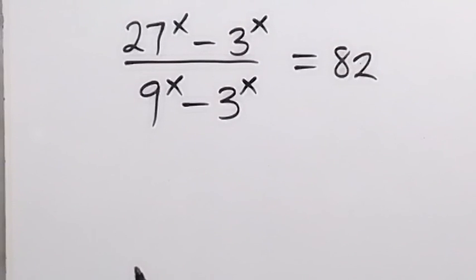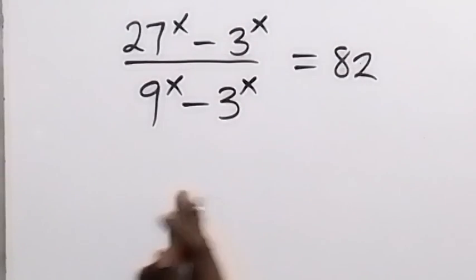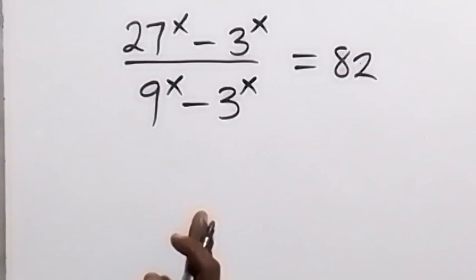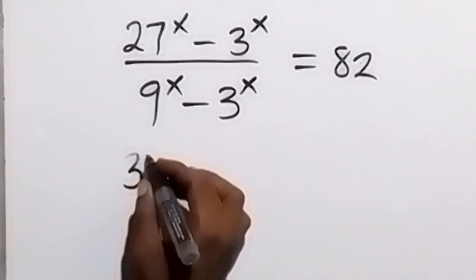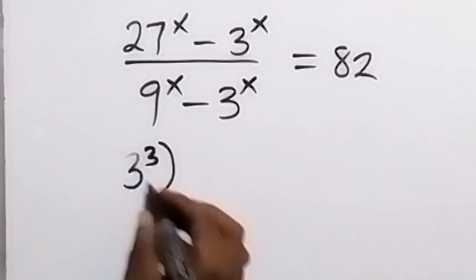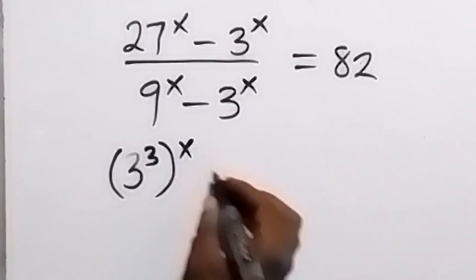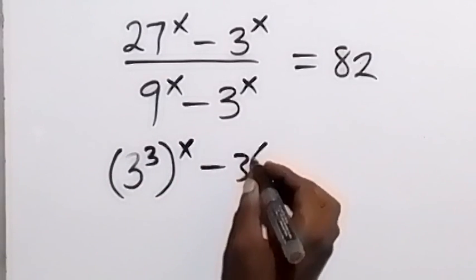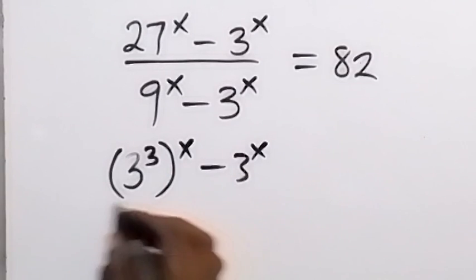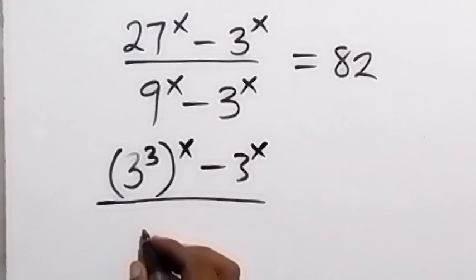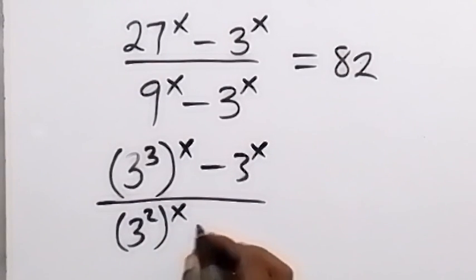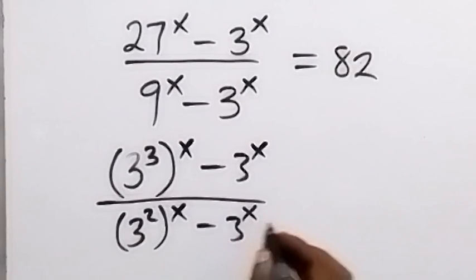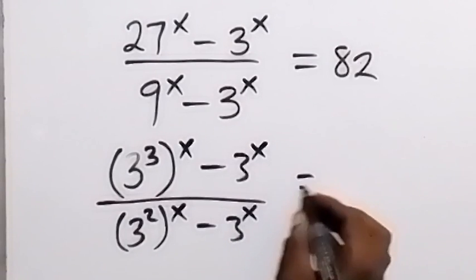From here, let's change everything on the left hand side to base 3. So we can write 27 as 3 raised to the power 3, then raised to the power x, minus 3 raised to the power x, divided by 9, which can be written as 3 squared raised to the power x. Then we have minus 3 raised to the power x equals to 82.